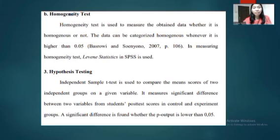Hypothesis testing. Independent Sample t-test is used to compare the mean scores of two independent groups on a given variable. It measures significant difference between two variables from students' posttest scores in control and experimental groups. A significant difference is found whenever the p-output is lower than 0.05.